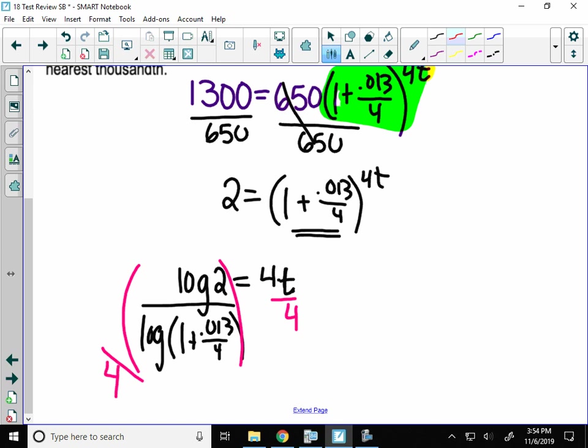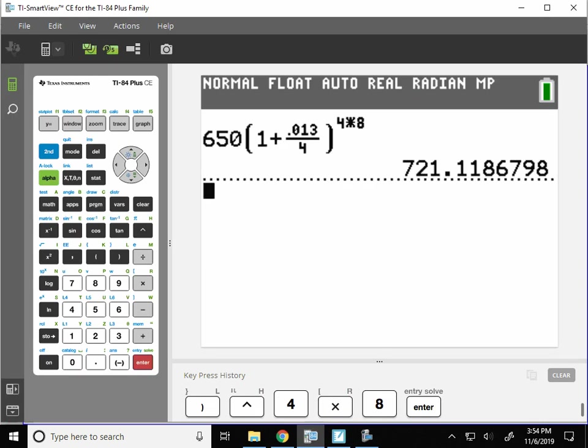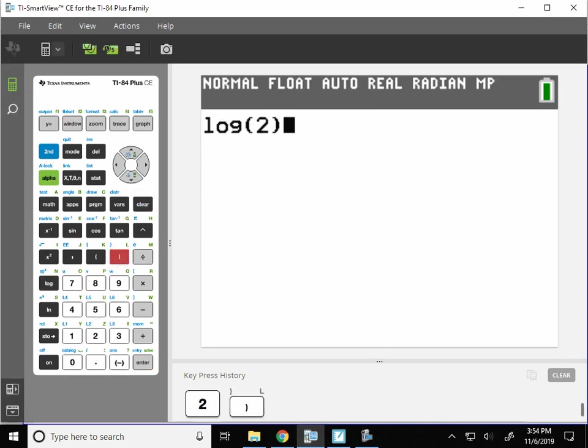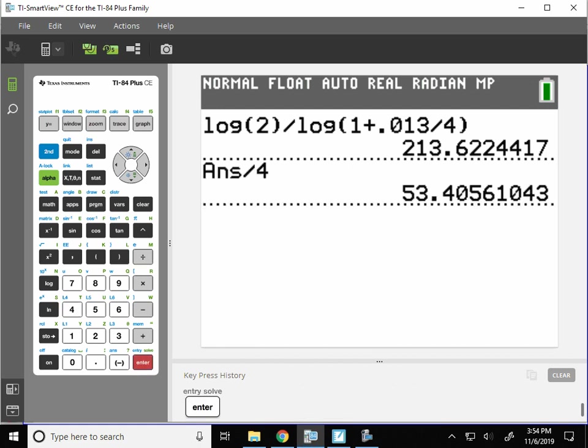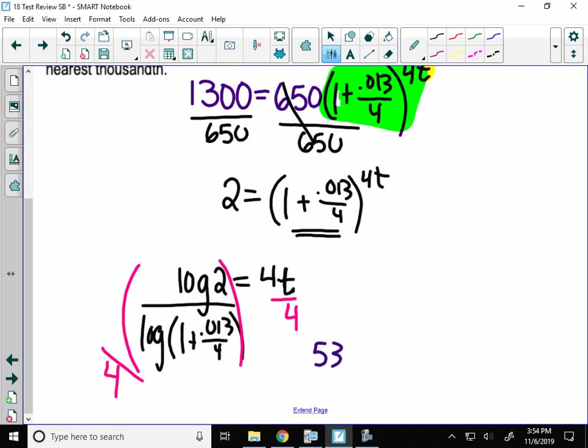Here is finally where you pull out your calculator. Don't type things into your calculator before this step. Now you're going to type log of 2, close your parentheses, divide it by log of 1 plus 0.013 divided by 4. Now you're going to hit enter. This isn't the final answer. I still have to divide all of that by 4. And you'll get 53.406 years. It's going to take 53.406 years until, if you use that bank account, you get $1,300. Which seems like a really long time. You're going to be in your 60s.